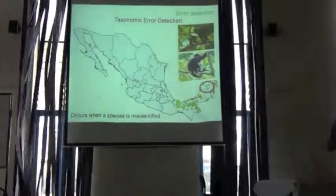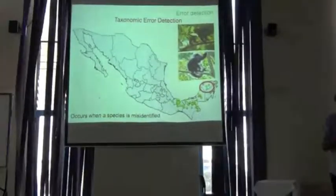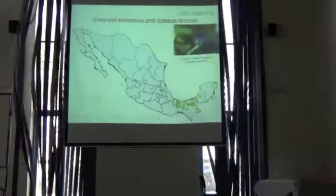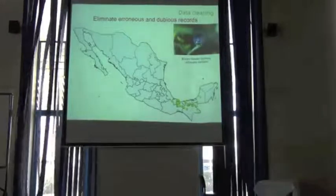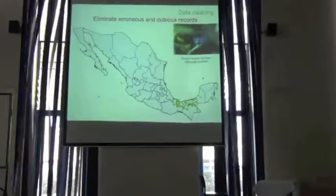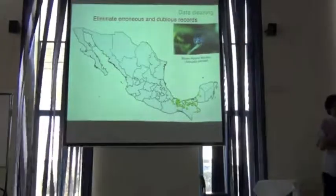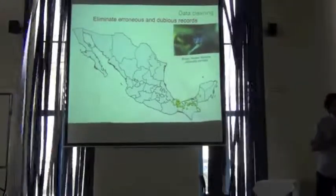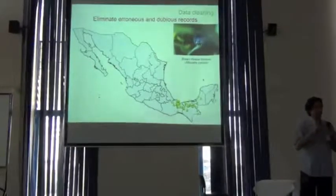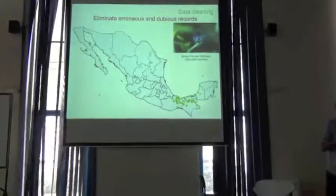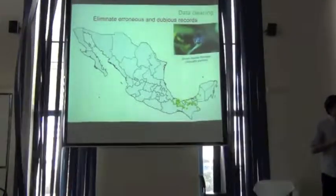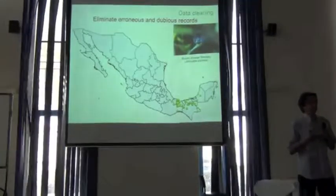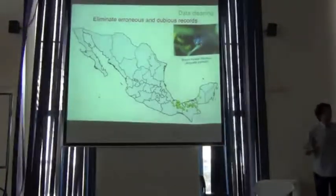When you see something strange in your data, go back to the original data. When you find errors, go back to the original record. If it's a museum specimen, make every effort to go back and review that specimen to see what information is missing. If you find a record that you cannot correct, it's much better to eliminate those dubious or highly erroneous records than to include them and produce errors in the modeling.